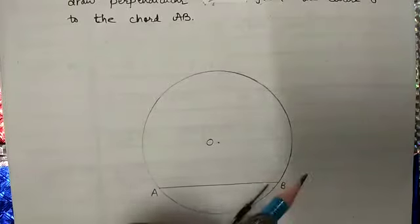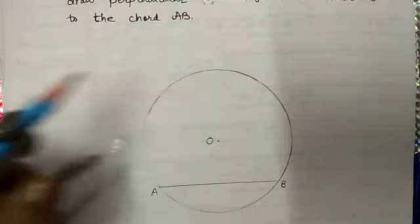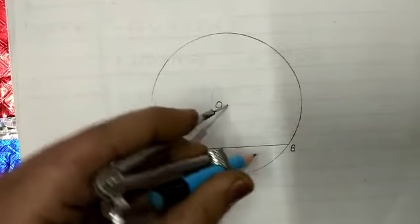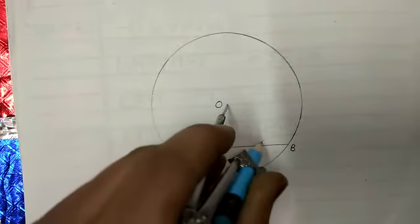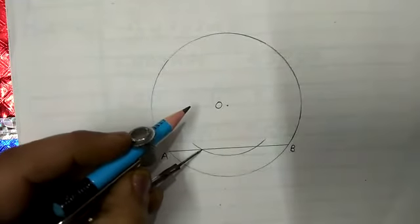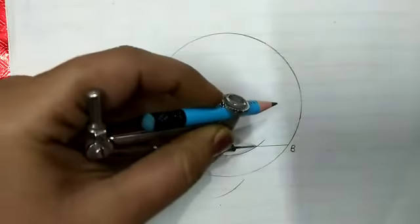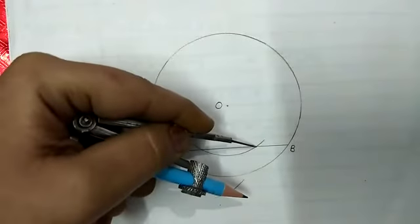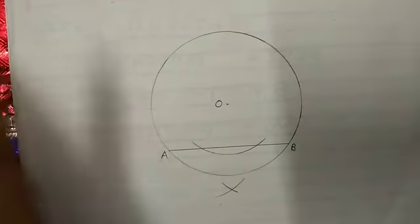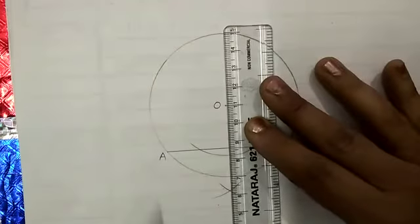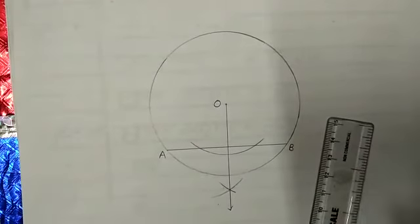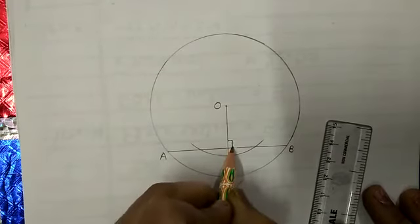Using compass, draw perpendicular from the center O to the chord AB. This is a situation that we are given a line and a point is outside the line. We have to draw perpendicular from a point which is outside the line. We will open our compass in such a way that we are getting two points on our line segment AB. Now we will keep our compass at these two points one by one. The two intersecting points we have got.